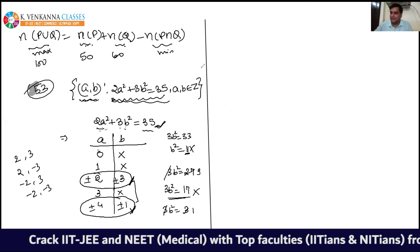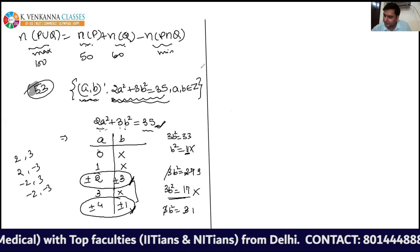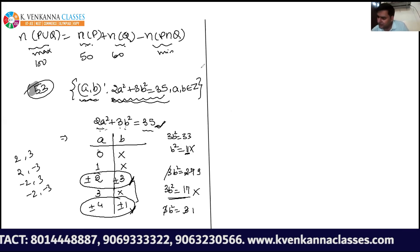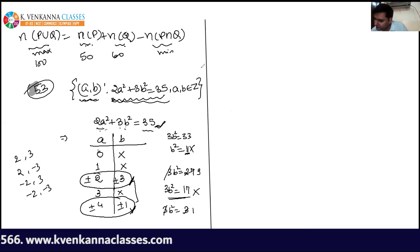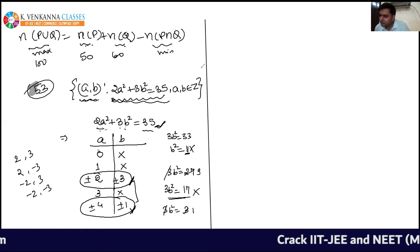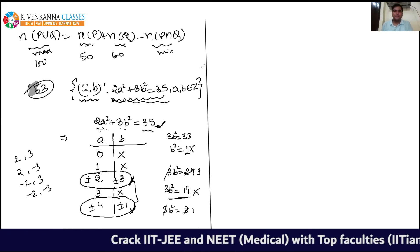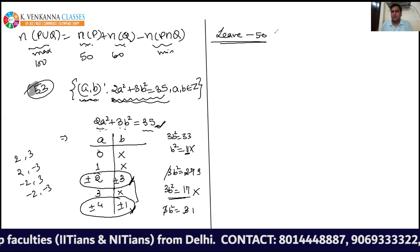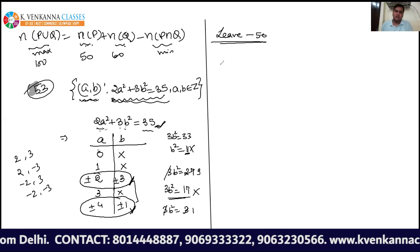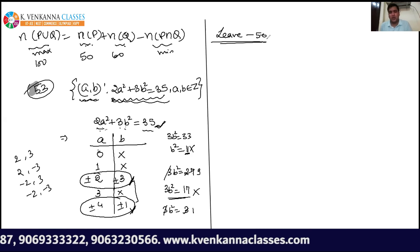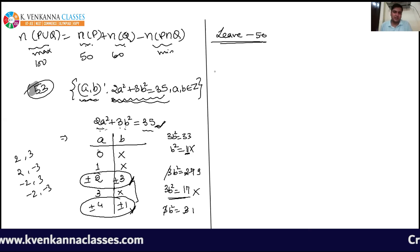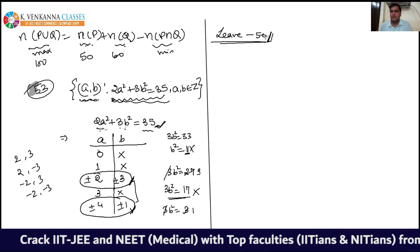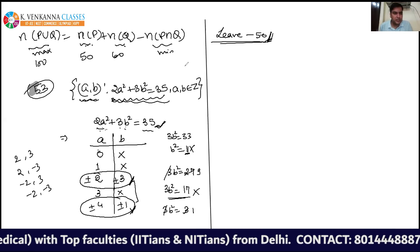Nagis is asking for question 50. Leave question number 50 because it involves Cartesian product of sets, which I'm not going to teach as it's generally not tested in competitive exams. By mistake it's there in the DPP — just leave questions 50 and 51.